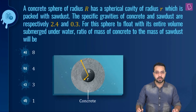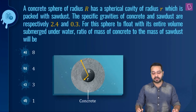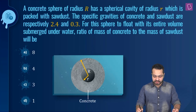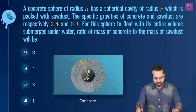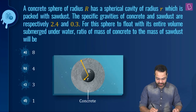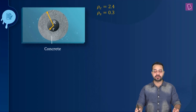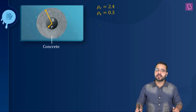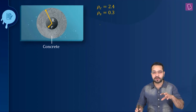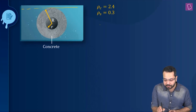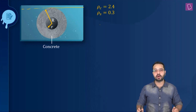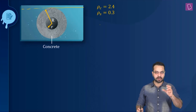The question is: a concrete sphere of radius R has a spherical cavity of radius r which is packed with sawdust. The specific gravities of concrete and sawdust are respectively 2.4 and 0.3. For this sphere to float with its entire volume submerged underwater, the ratio of mass of concrete to the mass of sawdust will be? The sphere is made of concrete with a cavity filled with sawdust, and it floats completely submerged.